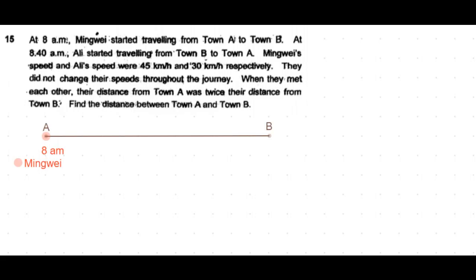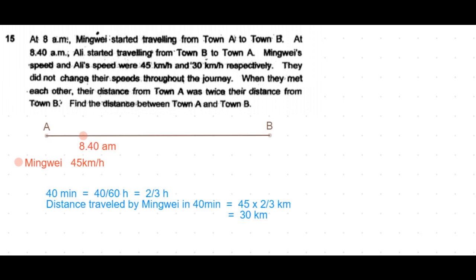This is a classic speed problem. Let's first draw the two points A and B. Mingwei at 8 a.m. is at Town A, and at 8:40 a.m. Mingwei would have traveled some distance at 45 kilometers per hour speed. In 40 minutes, 40 minutes is equivalent to 40/60 which is 2/3 of an hour.